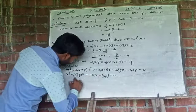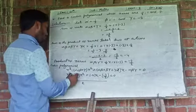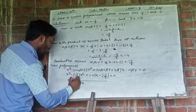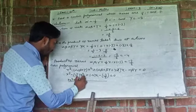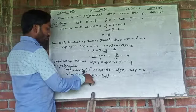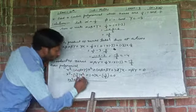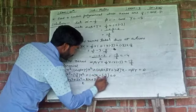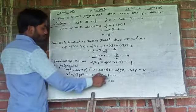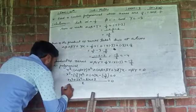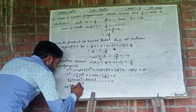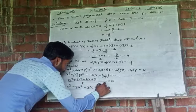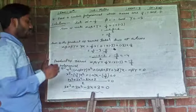Now we can take LCM here, we have 2. So it will be 2 x cubed. Here it is minus, so minus minus it will be plus 3 x square. Here it will be minus 4 and this one 2, so minus 8 x and here plus 3 is equal to 0. When we multiply this 2 with 0, it will be 0. So our required cubic polynomial is 2 x cubed plus 3 x square minus 8 x plus 3 is equal to 0. And this is our required cubic polynomial.